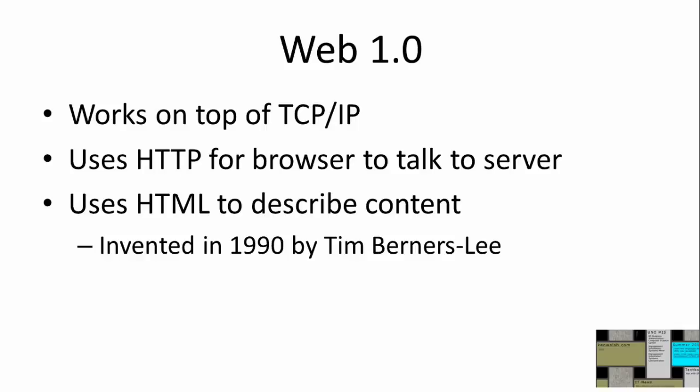TCP/IP and domain names just allow messages to be delivered from one computer to another worldwide. Now, Web 1.0 technologies — this is the web of the 1990s — are what actually display an image on the screen. It works on top of TCP/IP. HTTP is the protocol the browser uses to request a file from a web server, and HTML is the primary language of the content in that file. The browser understands HTML to display content on screen. HTML was invented in 1990 by Tim Berners-Lee.